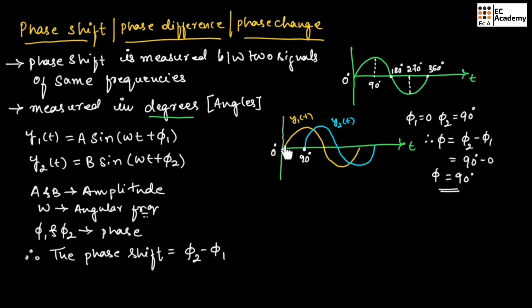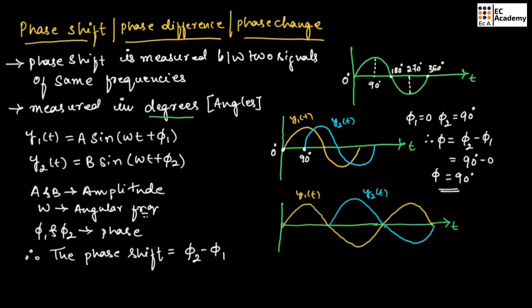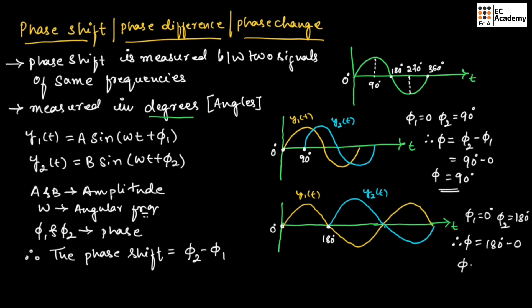So we can say signal y1(t) leads signal y2(t) by 90 degrees, or the phase shift between these two signals is 90 degrees. Now let us consider one more example where the first signal y1(t) starts from 0 degrees and the second signal y2(t) starts from 180 degrees. Therefore, φ1 is equal to 0 degrees and φ2 is equal to 180 degrees. The overall phase shift is 180 degrees minus 0 degrees, so the phase shift between these two signals is 180 degrees.